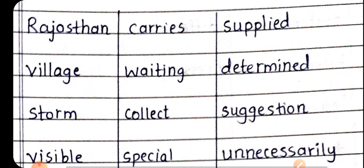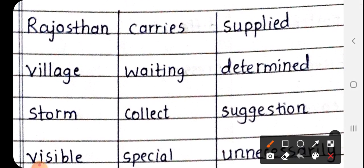R-A-J-A-S-T-H-A-N, Rajasthan. Rajasthan, one of the state of India. Rajasthan is one of the state of India. Next, village. V-I-L-L-A-G-E, village matlab gao. Next, storm. S-T-O-R-M, storm matlab andhi, yafir tufan.